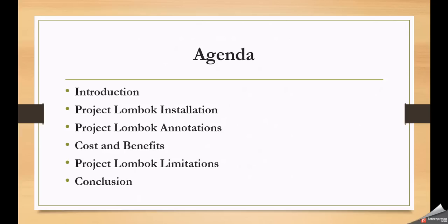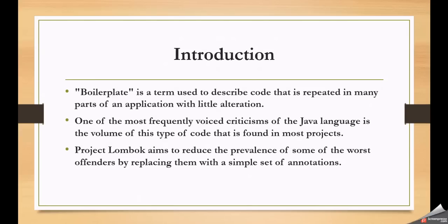Let's get started. Coming to the introduction — what is boilerplate code? The term boilerplate code describes code that is repeated in many parts of an application with little alteration. Any code written at several places of the project can be called boilerplate code. In Java applications, we can find that kind of boilerplate code in several classes. For example, JDBC programs, which we write to execute database queries from a Java application.